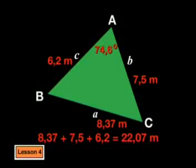We can round that off to 8.37 metres. We usually round off our calculations to two decimal places. After all those calculations, we now know that we need 8.37 metres for the fencing poles on one side of the sandpit. The other sides were 7.5 metres and 6.2 metres, so all in all we need about 22.07 metres.